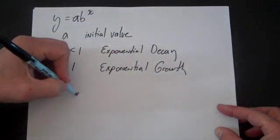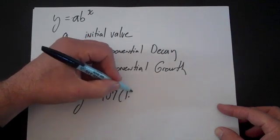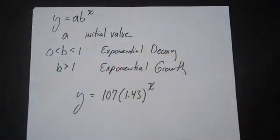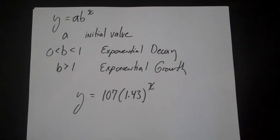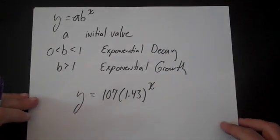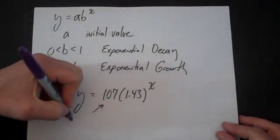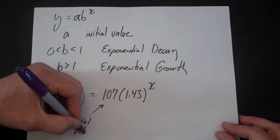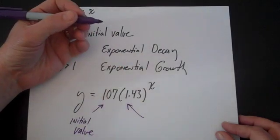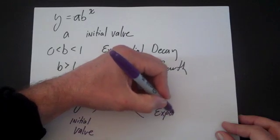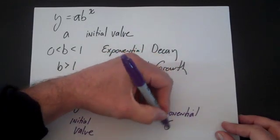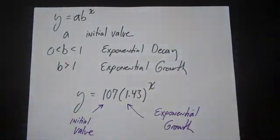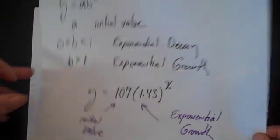So if we look at a problem, for example, y is equal to 107 times 1.43 to the x, we can answer the question: is it exponential growth or decay, and what is the initial value? In this case, 107 is the initial value, and since 1.43 is greater than 1, this is an exponential growth problem. By writing this in a slightly different form, we can actually read more from this, so let's look at an alternate form.